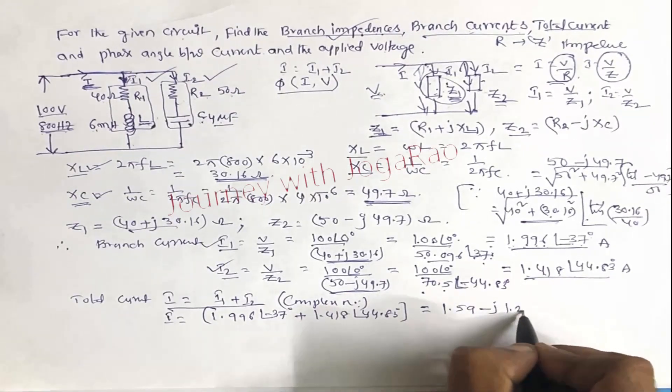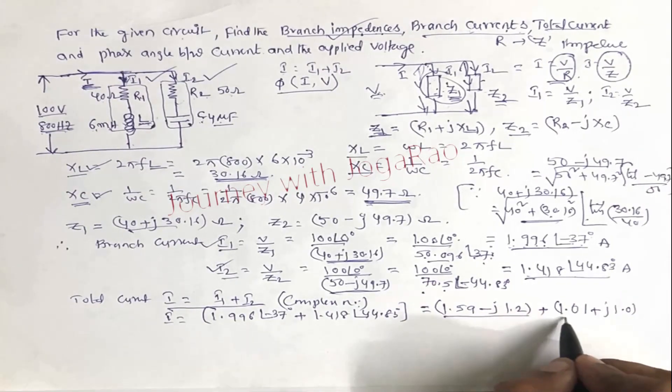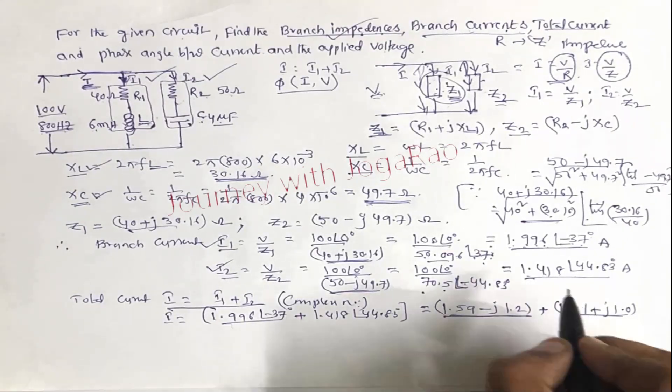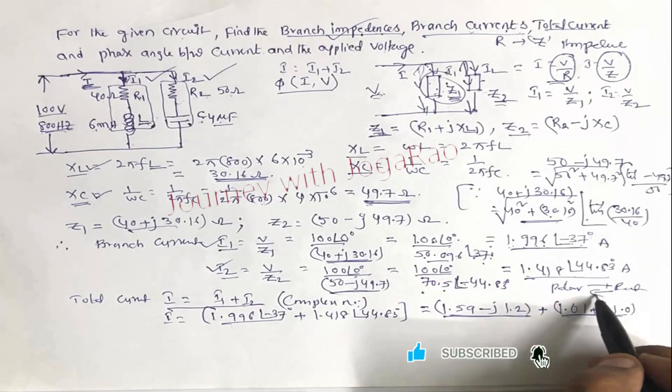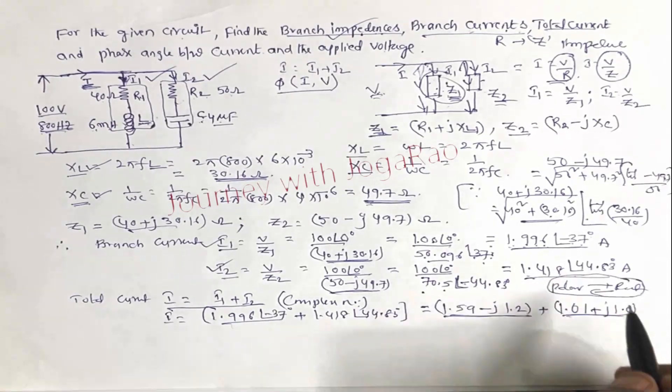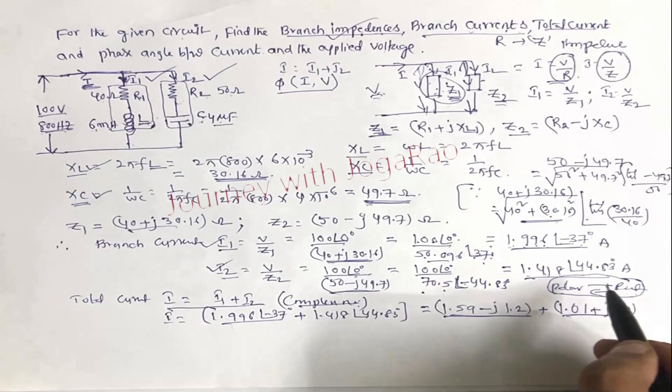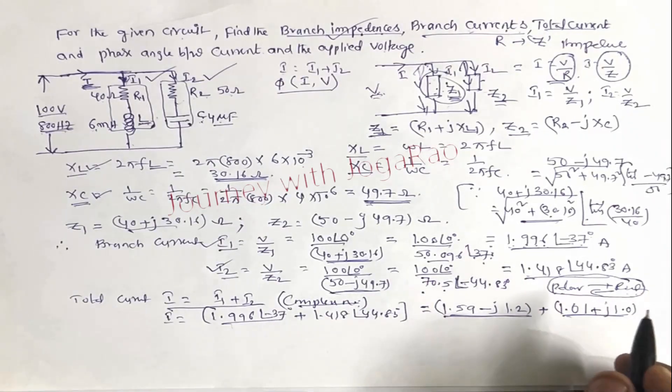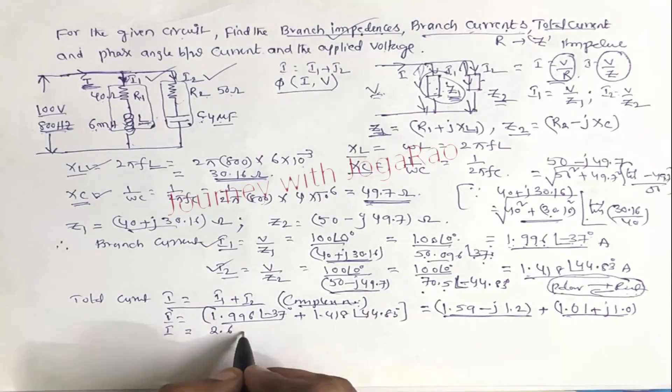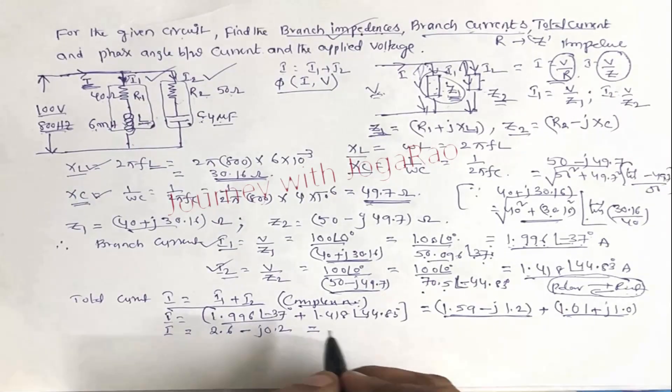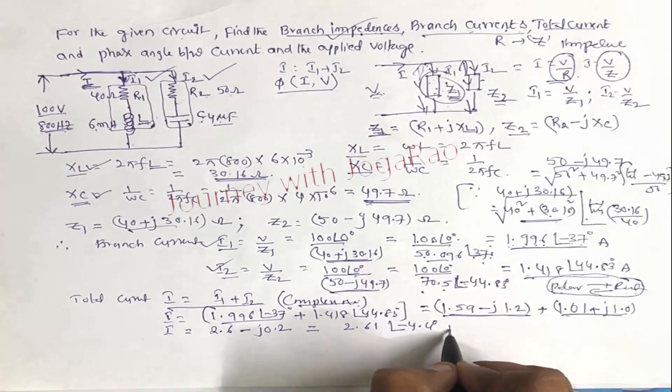Then convert to rectangular formula. Then simplify, the answer is 1.59 minus j 0.12 plus 1.01 plus j 1. Convert polar form to rectangular form. Then simplify, I is equal to 2.6 minus j 0.2. In polar form, 2.61 at an angle minus 4.4 degrees amperes.